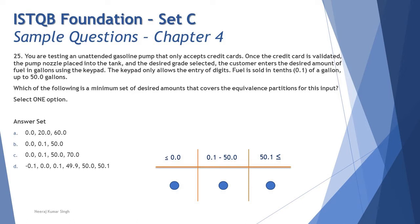But as per equivalence partitioning, there should be only one value from each partition to minimize test cases. We are taking two values from the second partition - 0.1 and 50.0 - which contradicts our technique. So C is also wrong.